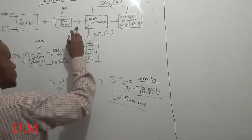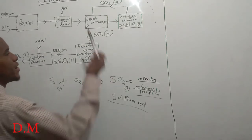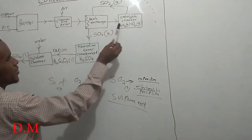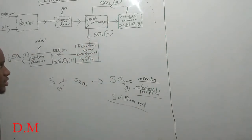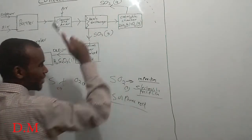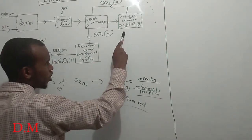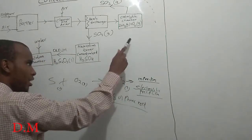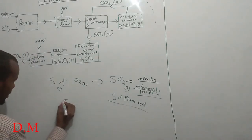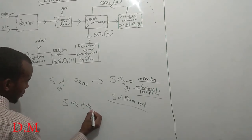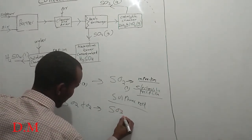After that, the gas is passed through a heat exchanger. This heat exchanger is used to heat the gas using the sulfur trioxide coming from the catalytic chamber. Then in the catalytic chamber, sulfur dioxide is reacted with oxygen to form sulfur trioxide gas.